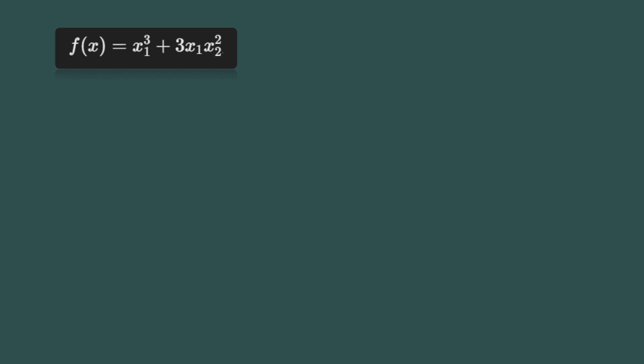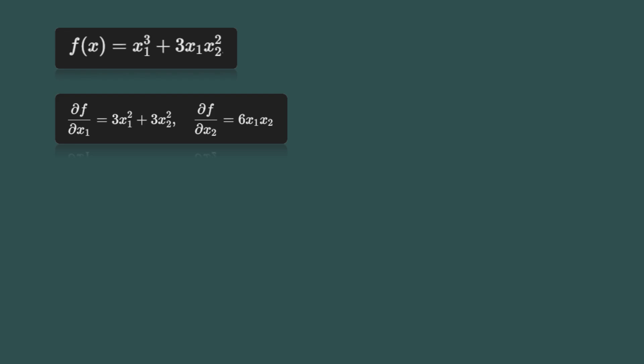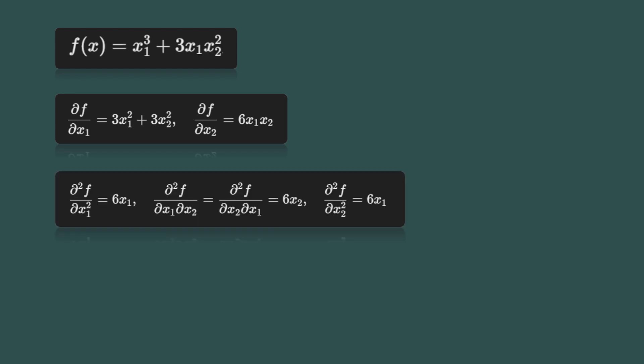First, we compute the first-order derivatives of the function. The function is f of x equals x1 cubed plus 3 times x1 times x2 squared. To find the first derivative with respect to x1, we take the derivative of the entire function while treating x2 as a constant. This gives us 3 times x1 squared plus 3 times x2 squared. Next, we compute the first derivative with respect to x2, treating x1 as a constant. The derivative is 6 times x1 times x2. Now, we move on to the second-order derivatives, which form the entries of the Hessian matrix.